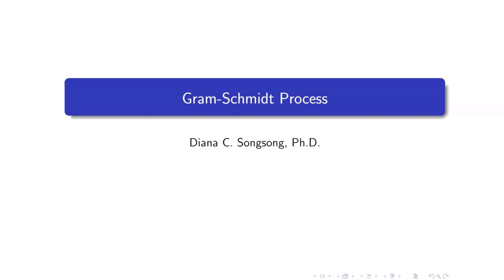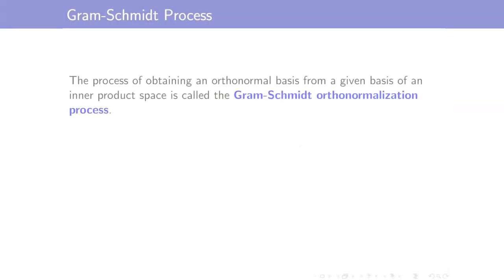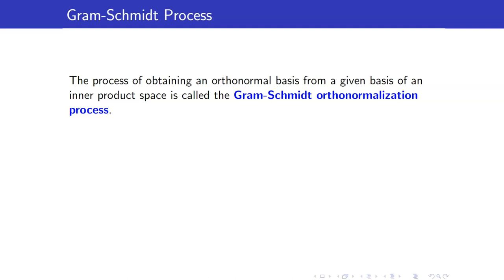In this lesson, I am going to talk about the Gram-Schmidt process. If we are given an inner product space V, and of course it has a basis, we can always turn a basis into an orthonormal basis. The process of obtaining an orthonormal basis from a given basis of this space is what we call the Gram-Schmidt orthonormalization process.